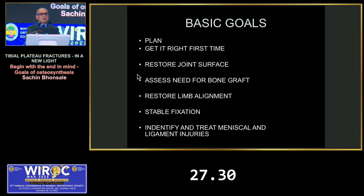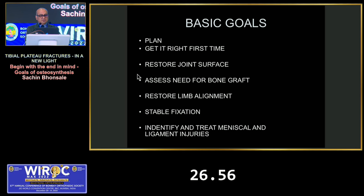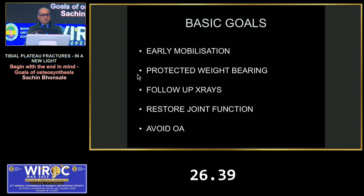Our basic goal is to plan properly — what type of fracture it is. We have to get it right the first time. Tibial plateau fractures wrongly done and it fails; it is a big problem to sort out, and even afterwards it may not be an easy total knee replacement. The first goal is to restore articular congruity. Second, assess the need for bone grafting. Third, restore limb alignment. Fixation should be stable for early mobilization, and associated soft tissue injuries like MCL rupture or meniscal tears must be identified.